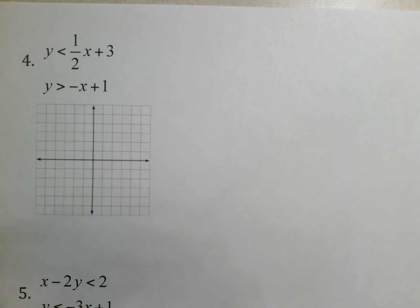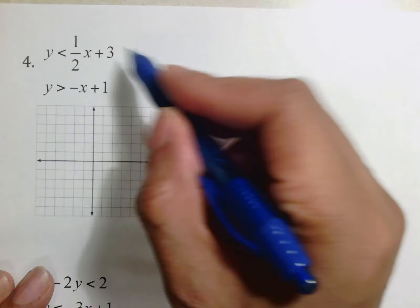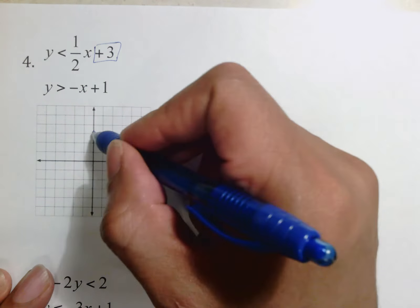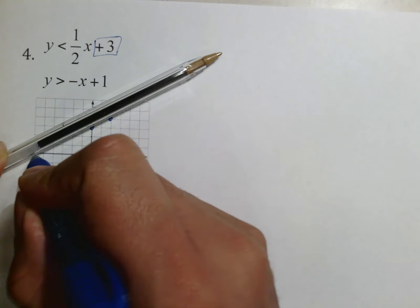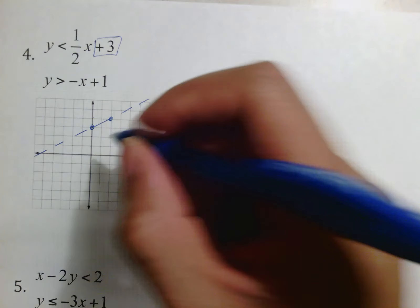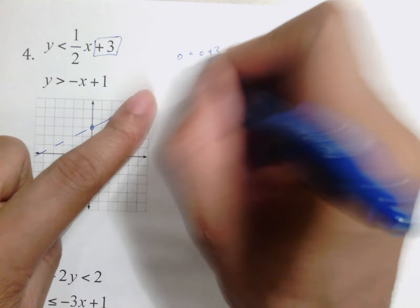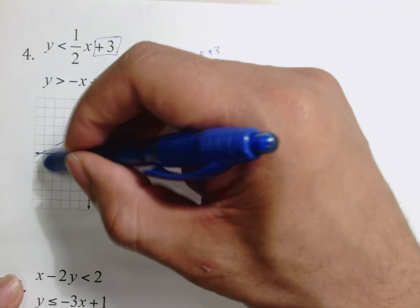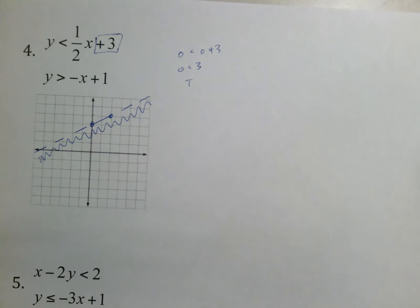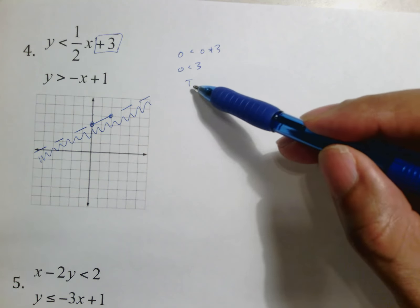Number four — go ahead and try to graph this, get the first line's dots down, and try your true/false for (0, 0). The 3 tells me to move up three as the y-intercept, and 1/2 tells me to go up one over two for slope. This is a dashed line. Testing (0, 0): 0 < 0 + 3 — that makes sense because 3 is bigger than 0, so it's true. True means go towards (0, 0) — that's what I remember, T stands for towards.